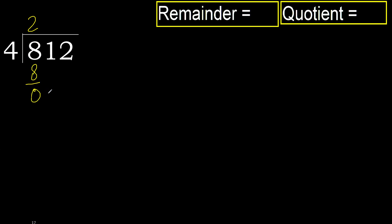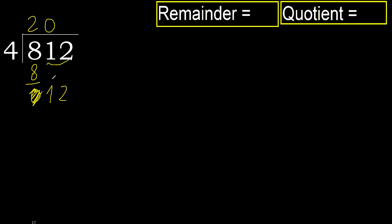Next, bring down. Eliminate the 0. 1 is less, therefore next: bring down 2 — that gives 12, two numbers. Therefore complete. Always complete with 0, because here there are 2 numbers.